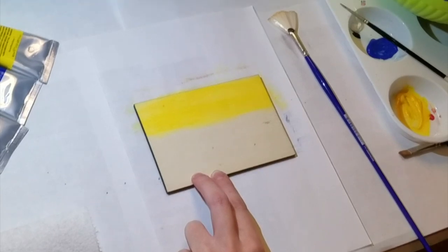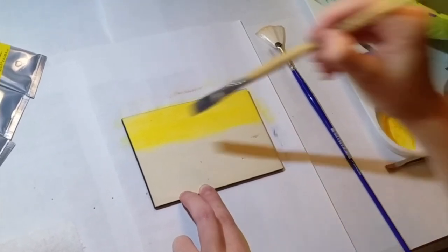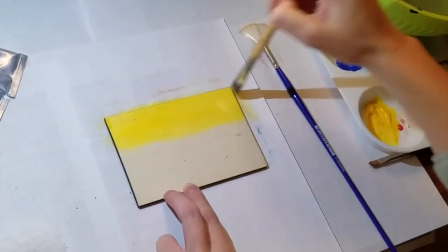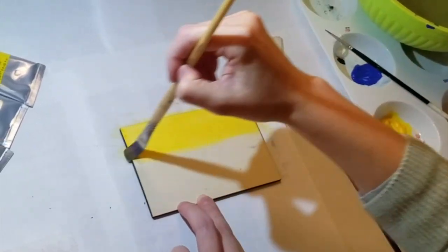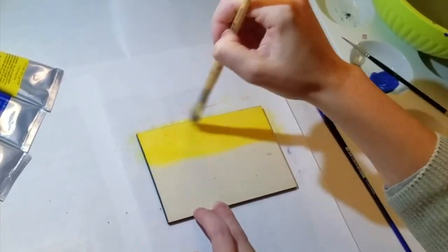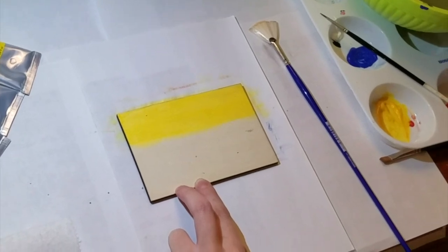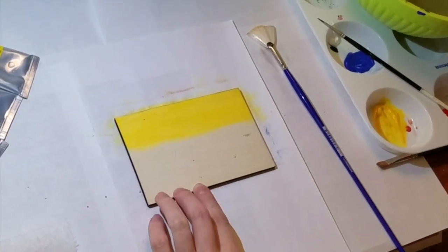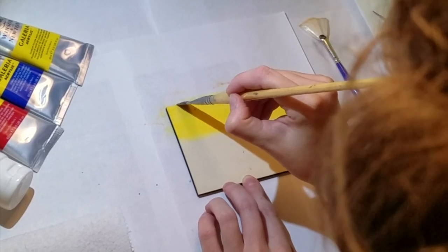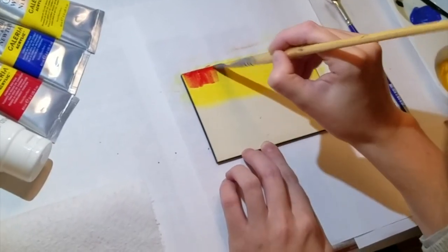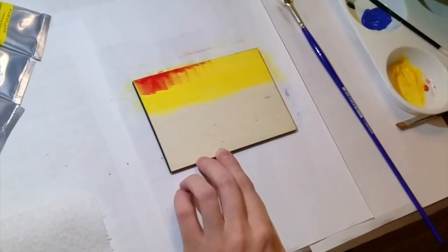Once I had the yellow painted, I went back in before it was completely dry to start the edges. I used just a touch of red, and then starting from the outside going in, I added the red to the yellow.